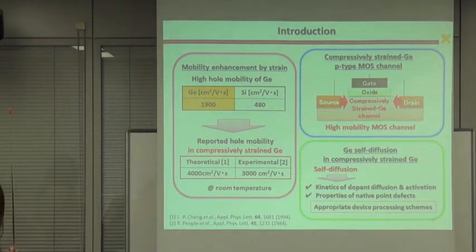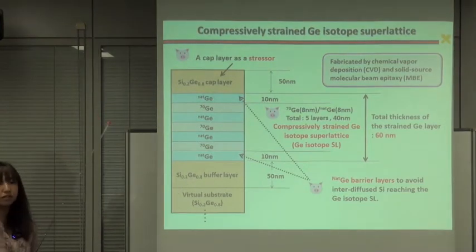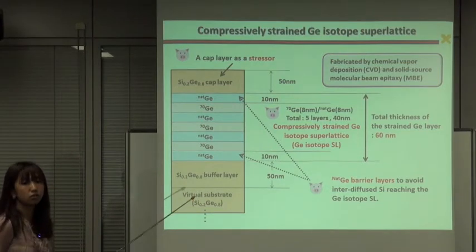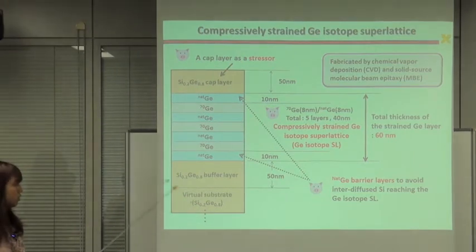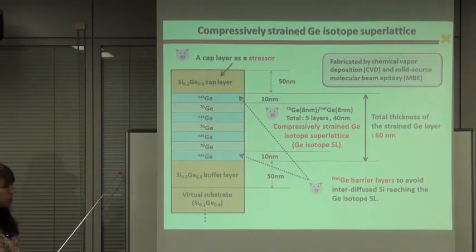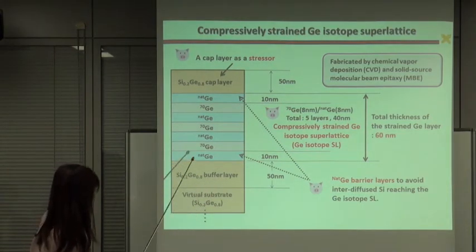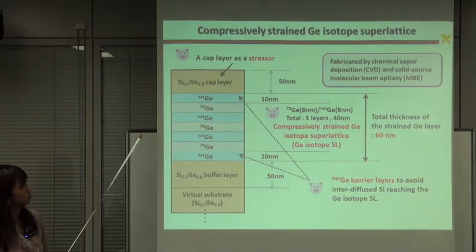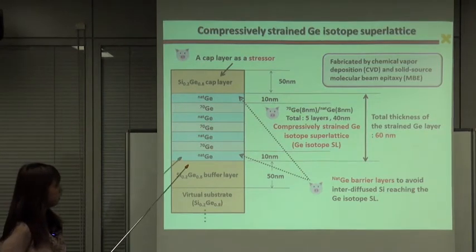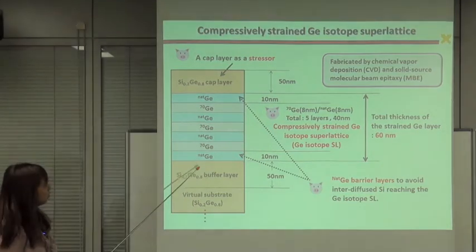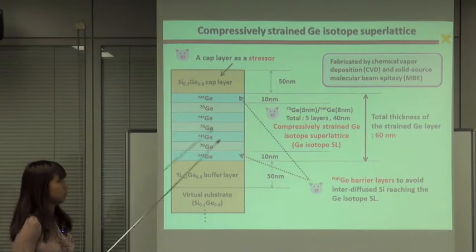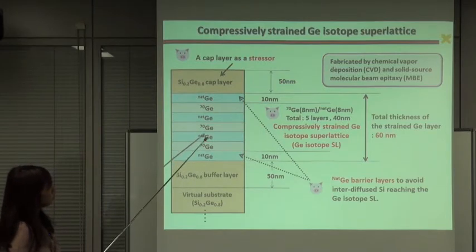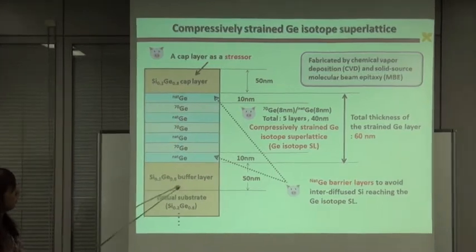So today I'd like to present our experimental study of germanium self-diffusion in compressive strained germanium by using our germanium isotope technology and also the growth technique of low dislocation density silicon germanium virtual substrate. This is the sample structure which we have fabricated for this study. We grew first 80% silicon germanium virtual substrate by chemical vapor deposition. And then we grew a 50 nm thick silicon germanium buffer layer by solid source molecular beam epitaxy MBE to smooth the sample surface and to avoid contaminating the strained germanium layer. And then a compressive strained germanium isotope was grown on the buffer layer.